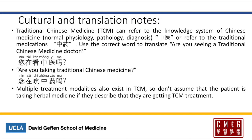Traditional Chinese medicine can refer to both the system of knowledge or the traditional medications. To refer to the system of knowledge of traditional Chinese medicine, you can say 中医. To refer to the medications, that will be 中药. So for example, to ask 'Are you seeing a traditional Chinese medicine doctor?' you would ask 您在看中医吗? And to ask 'Are you taking traditional Chinese medications?' that will be 您在吃中药吗?